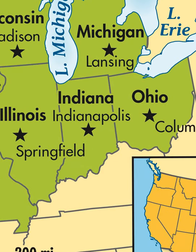Indiana has some interesting parts to it — some interesting shapes, specifically down at the bottom half of the state where the border is made up by large rivers, one of which is the Ohio River. And over here at the top of the state map, there's a little dip because of Lake Michigan, which makes up part of our northwest border. But the rest of Indiana is largely just a straight line — here, here, and here.